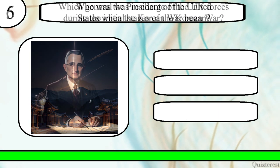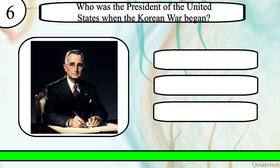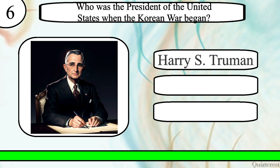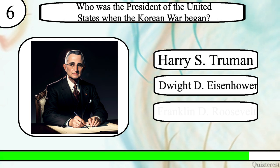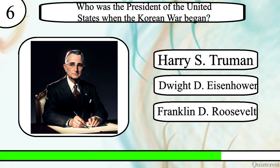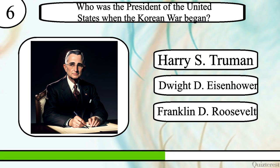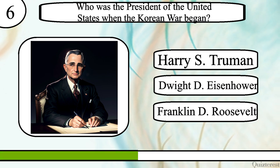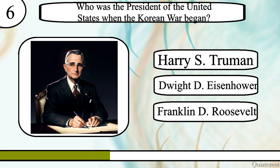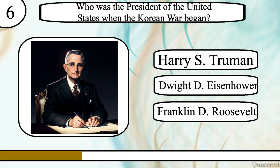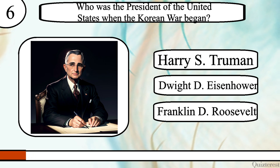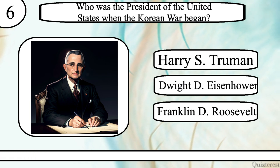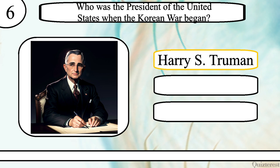Question 6. Who was the President of the United States when the Korean War began? Harry S. Truman, Dwight D. Eisenhower, or Franklin D. Roosevelt? The correct answer is Harry S. Truman.